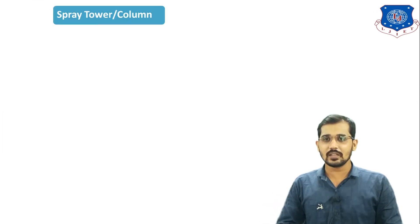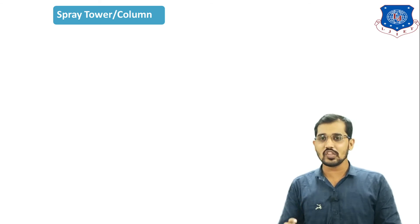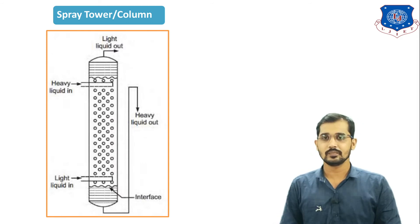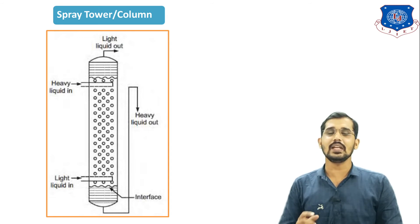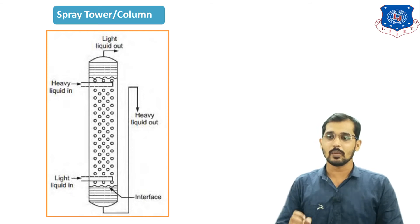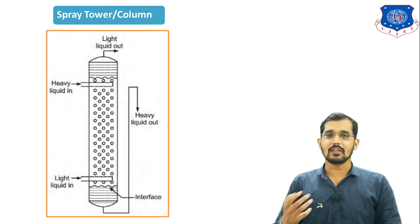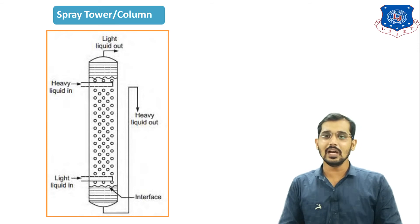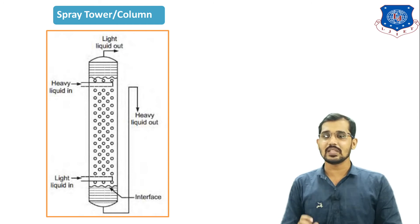Now we will see the next extractor, the Spray Tower or Spray Column, which is a differential or continuous column. You can see on the screen the figure for the Spray Tower or Spray Column. Here we have two feed streams: the first is heavy liquid in and the second is light liquid in. The heavy liquid in is the liquid stream to be extracted and the light liquid in is the extracting solvent. After liquid-liquid extraction, we get two outlet streams: light liquid out, which contains the extracted solute, and heavy liquid out, which is the raffinate phase.